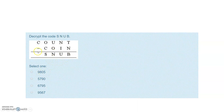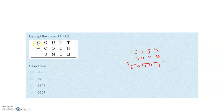Whenever you get a subtraction-related cryptarithmetic problem, try to convert it into an addition problem, because most of the time we are more comfortable with addition. So from COUNT minus COIN equals SNUB, we rewrite it as COIN plus SNUB equals COUNT.